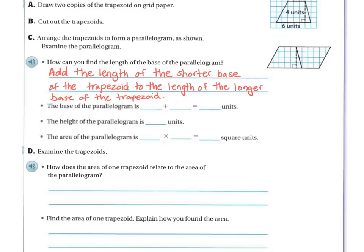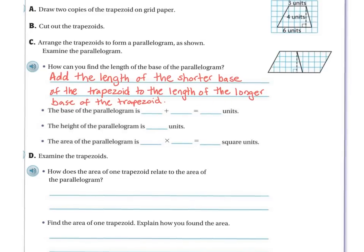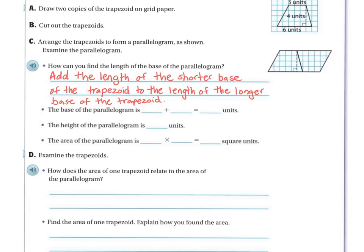You're going to take the 6 units and add it to the 3 units. So the base of the parallelogram is going to be the shorter side, which is 3 units, plus the 6 units, giving you 9 units. The height of the parallelogram is 4 units.